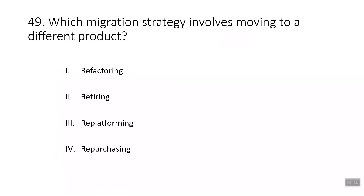Question forty-nine: which migration strategy involves moving to a different product? The answer is repurchasing, which involves replacing an existing application with a cloud-based version. Refactoring involves changing how an application is architected using cloud-native features. Retiring involves removing applications no longer in use. Re-platforming involves selectively optimizing aspects of an application to achieve cloud benefits without changing its core architecture.